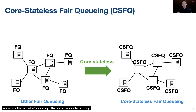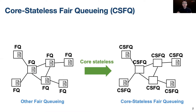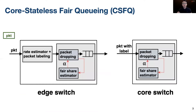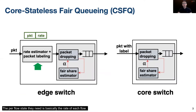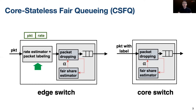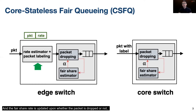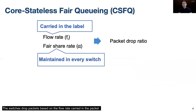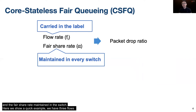We noticed that about 20 years ago there is a work called CSFQ. It achieves fair bandwidth allocation and does not require per-flow state in core switches. The per-flow state they need is basically the rate of each flow, and it is only maintained in edge switches, as each edge switch will label the flow rate to the packets. All switches maintain a fair share rate alpha for each port. The fair share rate indicates the fair bandwidth allocation for each flow, and it is updated based on whether the packet is dropped or not. The switches drop packets based on the flow rate carried in the packet and the fair share rate at the switch.